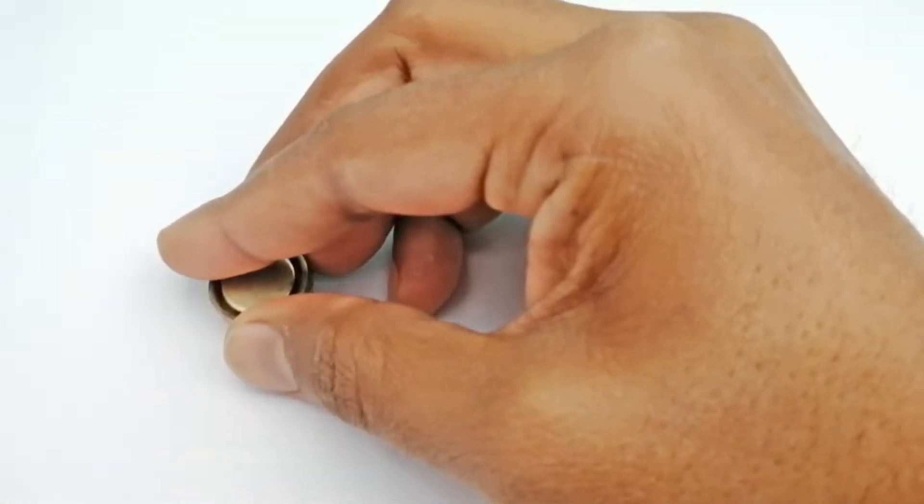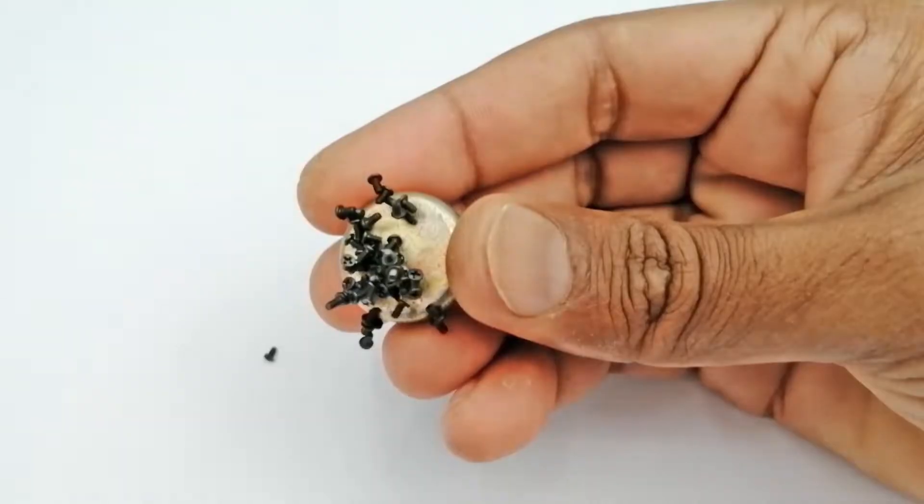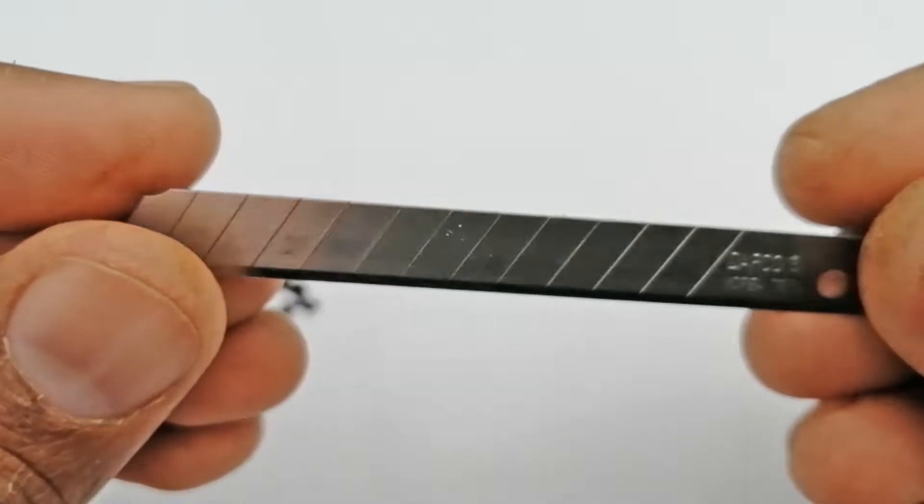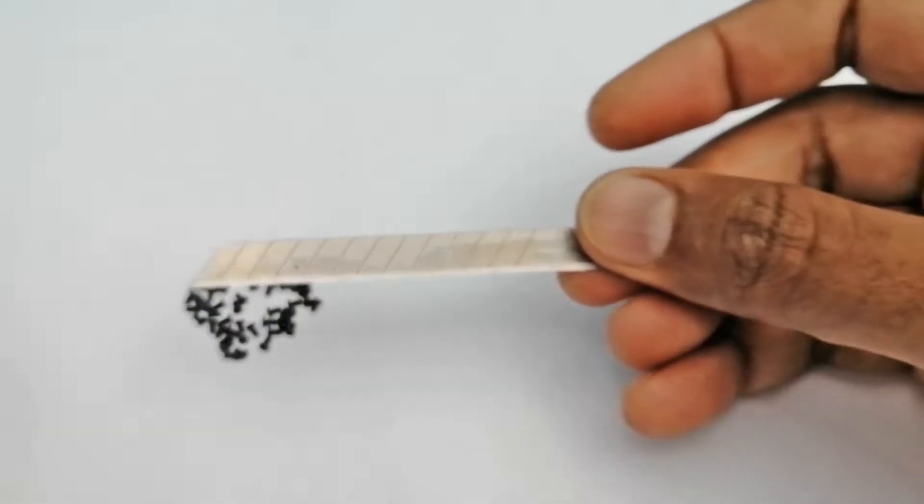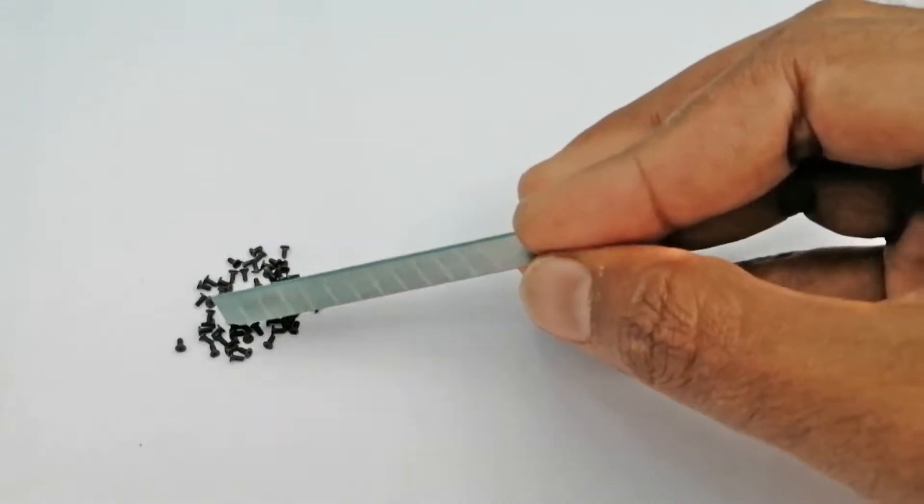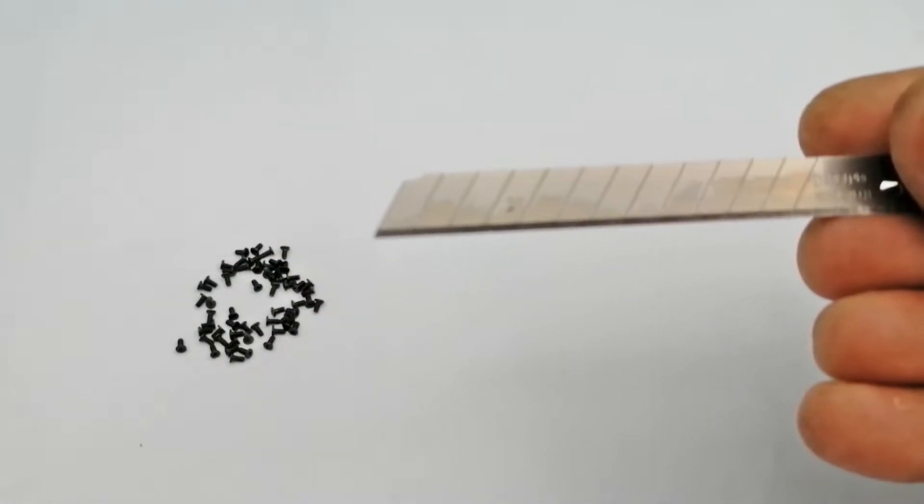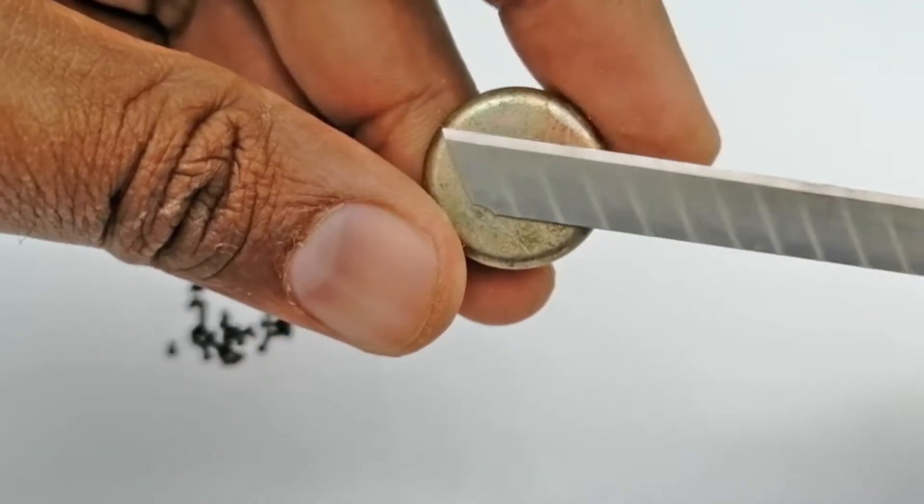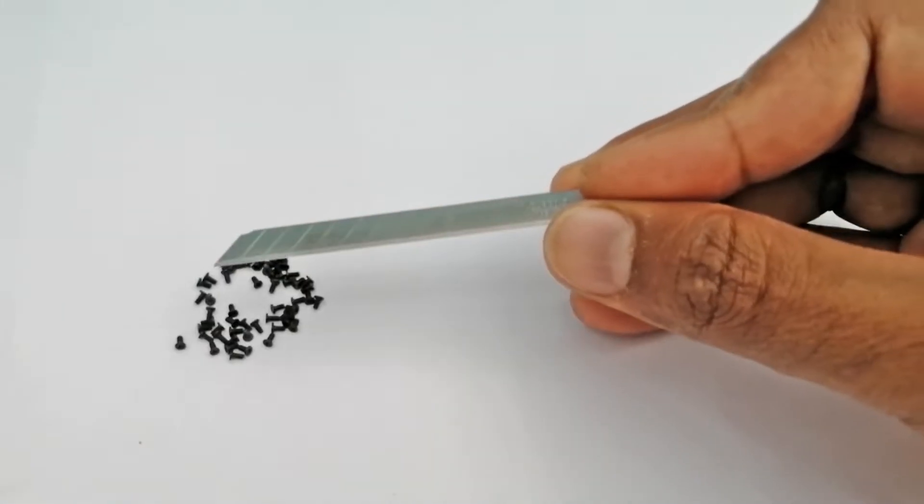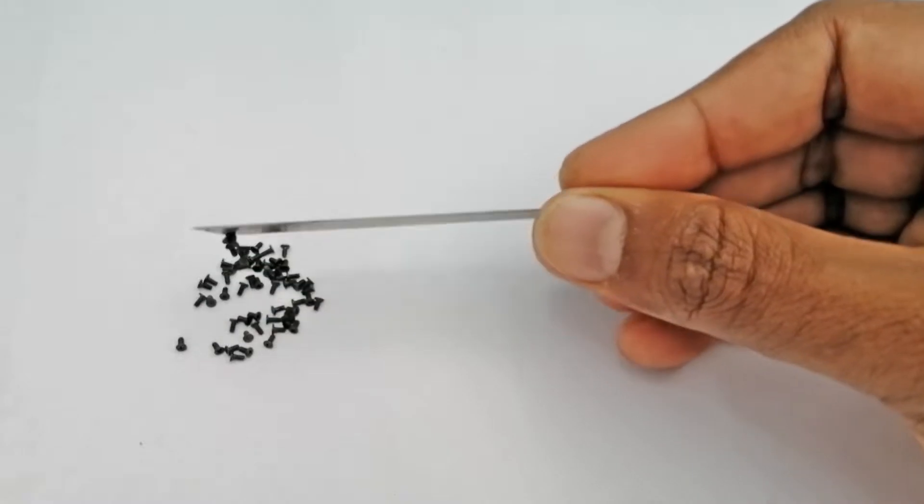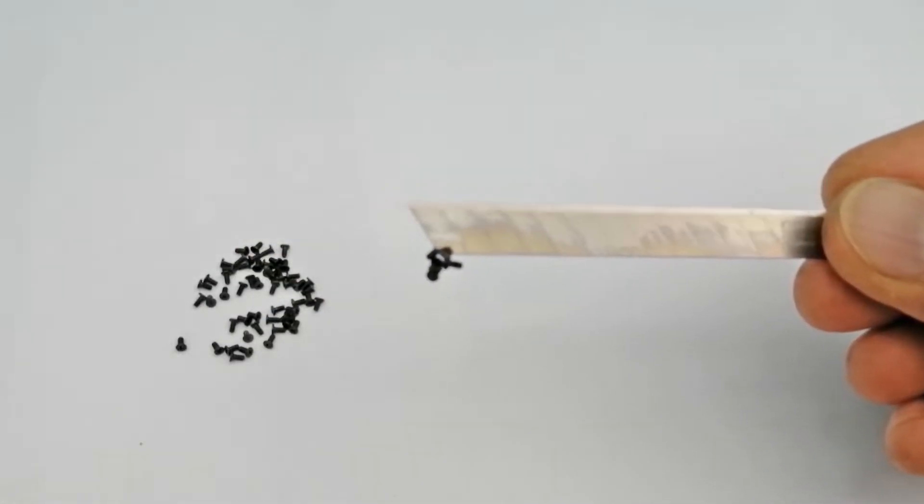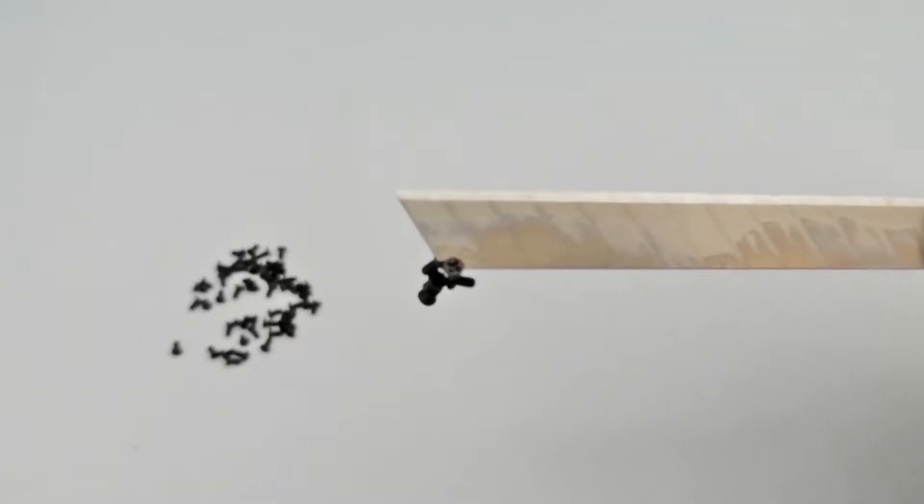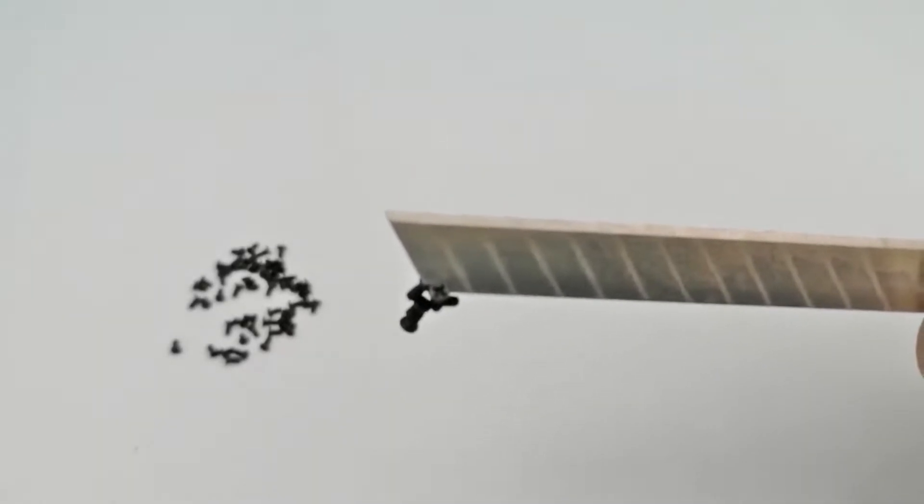We all know that a magnet attracts magnetic material like iron permanently. As you can see, we have an iron blade. It has no magnetic properties and it does not attract. We attach this iron blade to a permanent magnet once and see what happens. Viewers, as soon as we put it close to the iron nails, it attracted them. That means the magnetic properties have come into this blade as well.